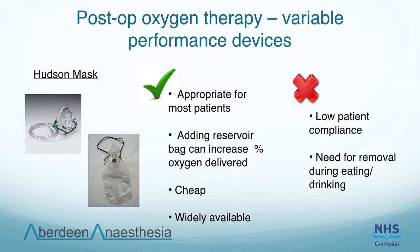Variable performance devices are so called because the percentage of oxygen delivered will vary depending on respiratory rate, inspiratory flow rate and the length of expiratory pause. Examples include the Hudson mask and nasal cannulae. The Hudson mask is appropriate for most post-op patients as the delivery of a fixed percentage of oxygen is not essential. They can be used with an oxygen flow of up to 15 litres per minute.